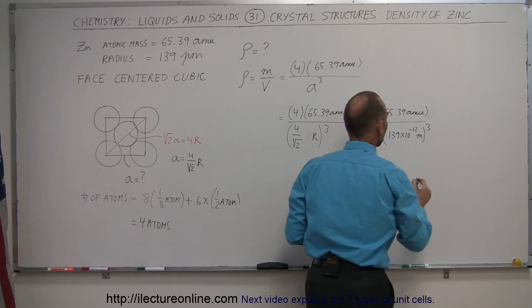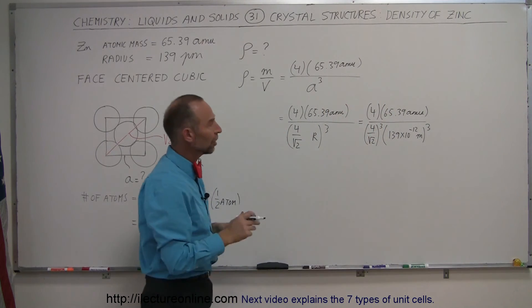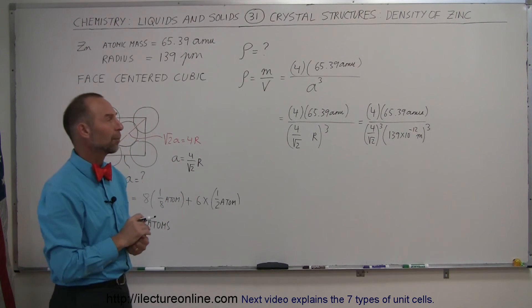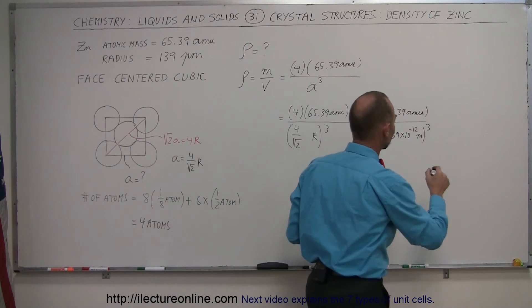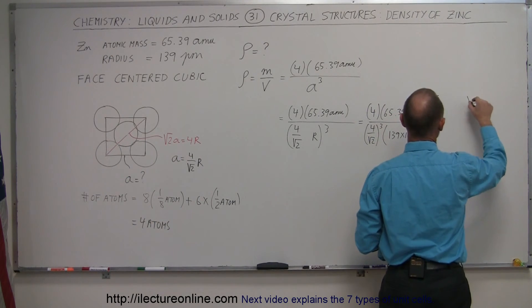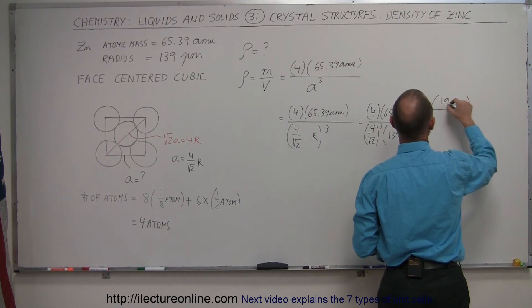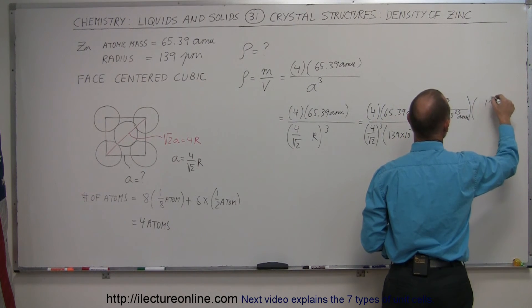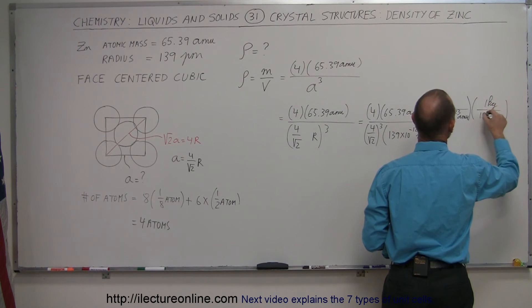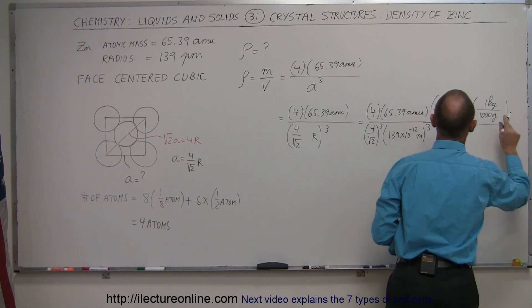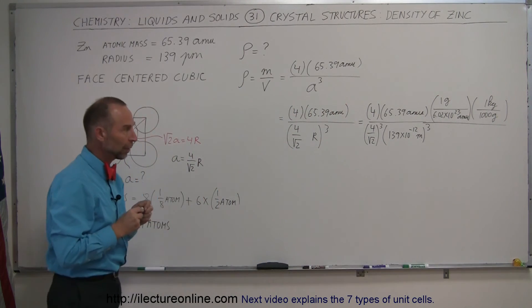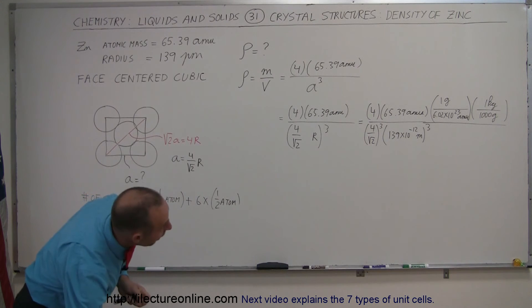We want one more thing to do. Notice in the numerator we have AMUs, in the denominator we have meters, so they're not standard units. Meters is, but AMUs is not. We have to convert that to kilograms. So first of all, we can convert to grams by using Avogadro's number. We can say that one gram is equal to 6.02 times 10 to the 23 AMUs. And then converting grams to kilograms, with one kilogram in the numerator, is equal to 1,000 grams. So here we have the conversion from AMUs to kilograms. We have meters in the denominator. We're now ready to go ahead and find the density of zinc.